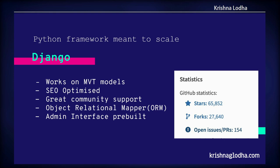Django is a Python framework that is meant to scale and to be secure. It works on the MVT model, which stands for Model, View, and Template. Whatever your database structure is, you create models from that. Whatever logic you want to execute when hitting a URL, static or dynamic, you write that in the view, and your HTML goes inside the template. Django uses the Jinja2 template engine, which helps you write dynamic HTML content.